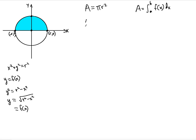So the area is going to be the integral from a to b. Now a and b are the limits of integration — the lower limit is negative r and the upper limit is r. The function of x, as we just derived, is the square root of r squared minus x squared, dx.